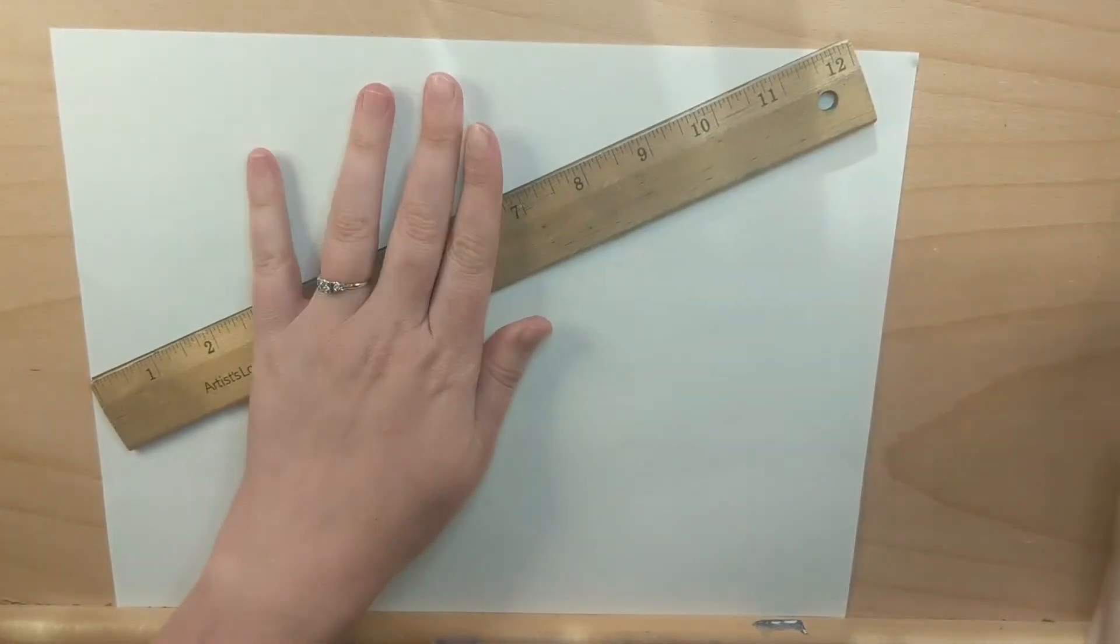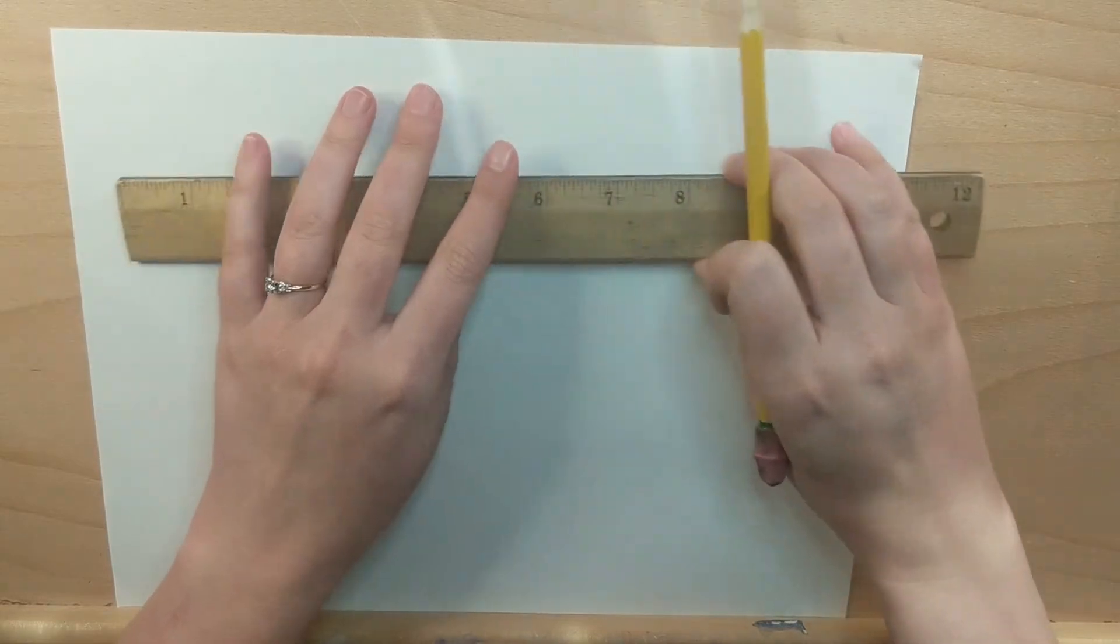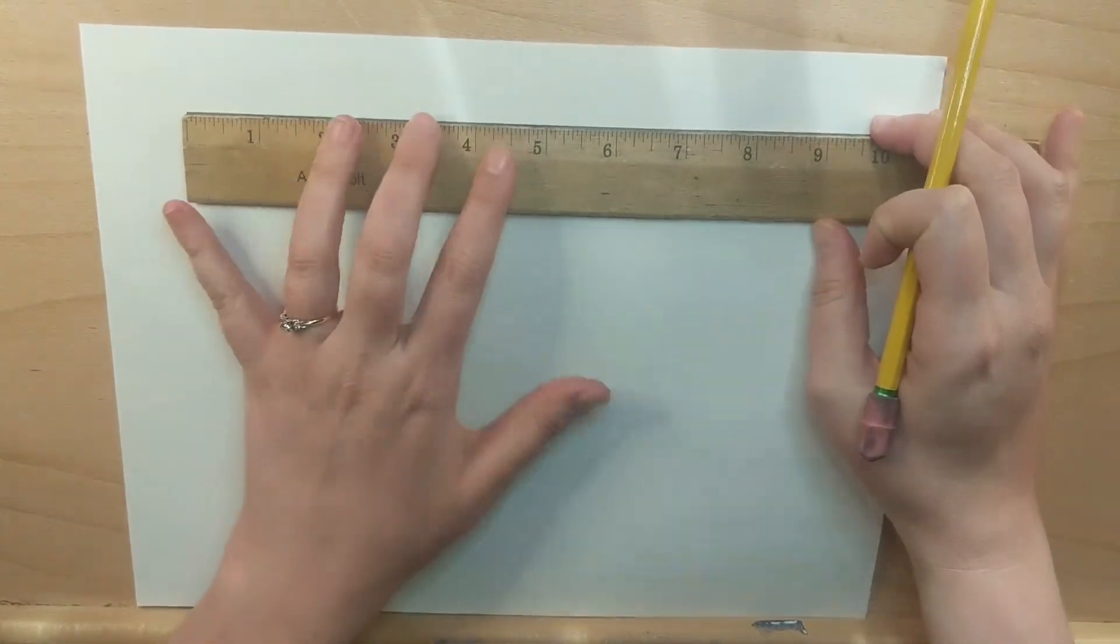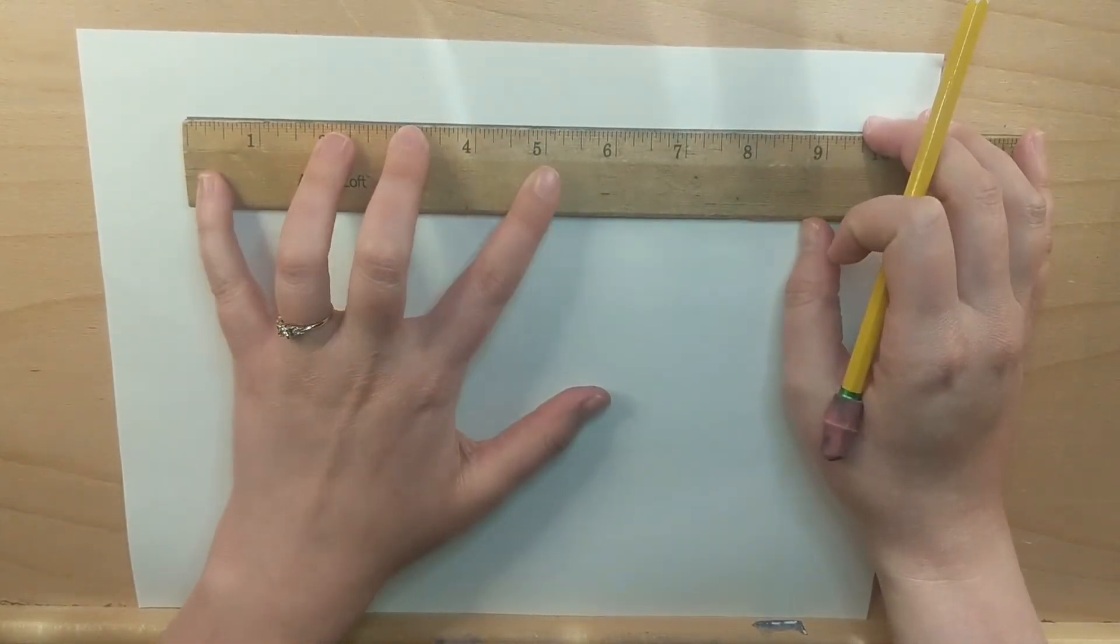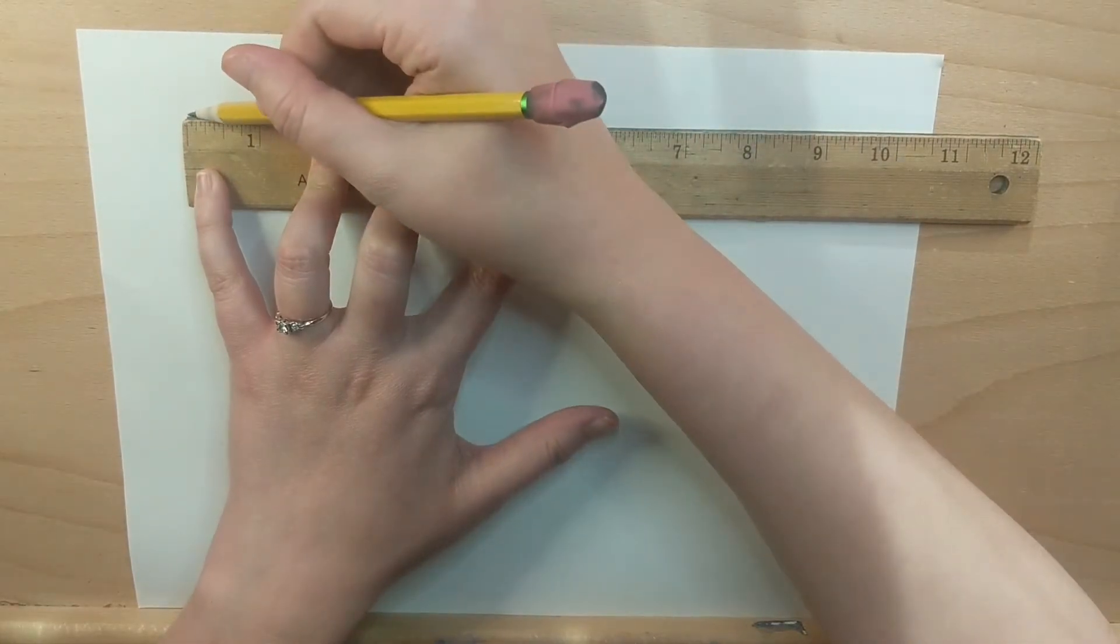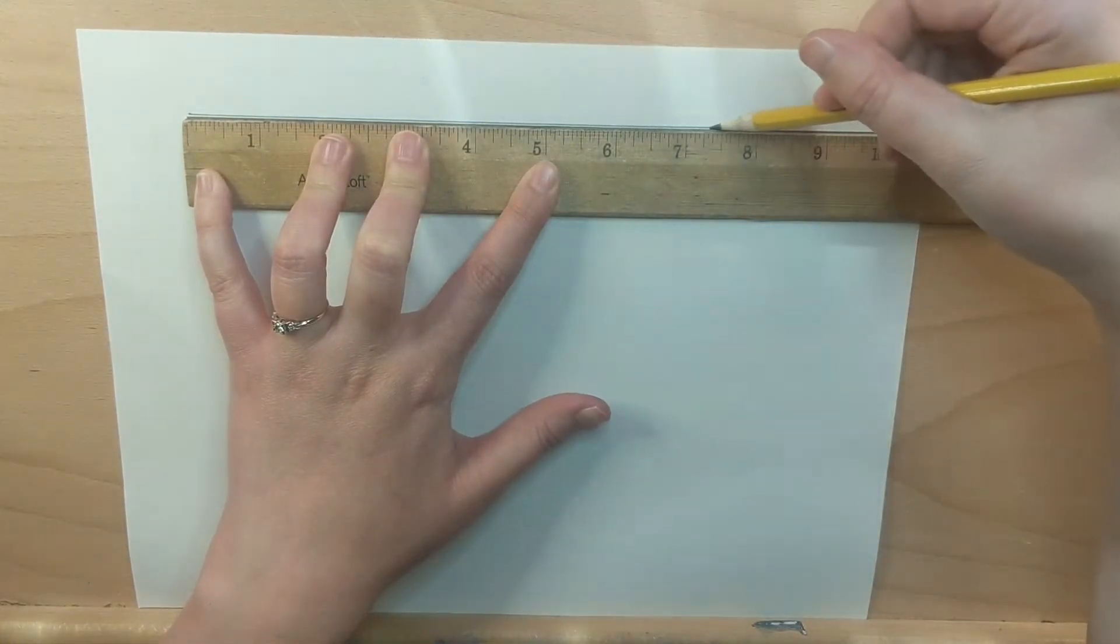Okay, we're going to be drawing out the Fibonacci sequence or the golden ratio. If you don't have a ruler, try to find a tape measure. If not, there's apps you can download. We're going to start by drawing an 8 inch line.